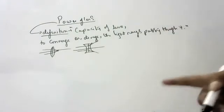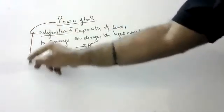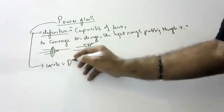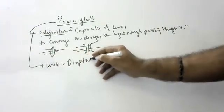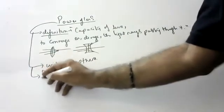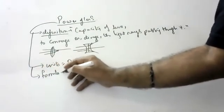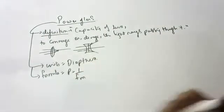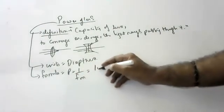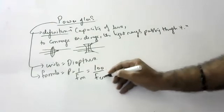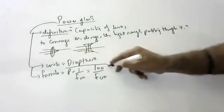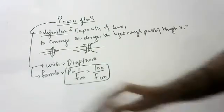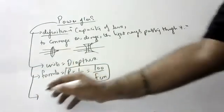The capacity of a lens to converge or diverge light rays passing through it is called the power of the lens. The unit is diopters. The formula for power: if they give focal length in meters, use P = 1/f; if they give focal length in centimeters, use P = 100/f. Both are valid.